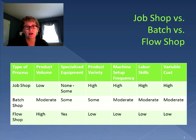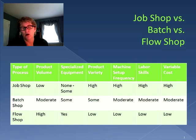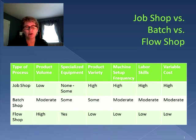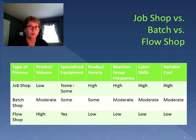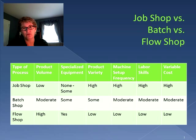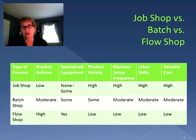When we compare them across different attributes of process design — product volume, specialized equipment, product variety, machine setup frequency, labor skills needed, and variable cost — with a job shop we give up product volume. We can't make a lot because we don't have specialized equipment, but we can make many different kinds of products. Every time we make a different product we have to keep setting up the machines, so we have very high machine setup frequency. Because the machines are general purpose, employees must be highly skilled to make a variety of different products, and as a result the variable cost is high as well.